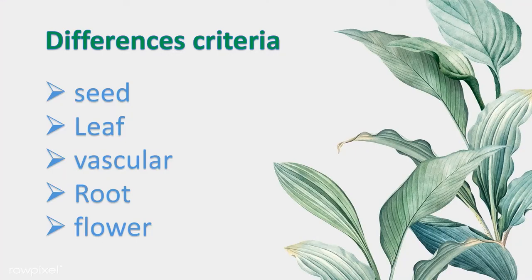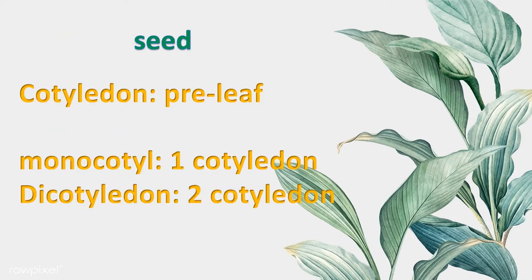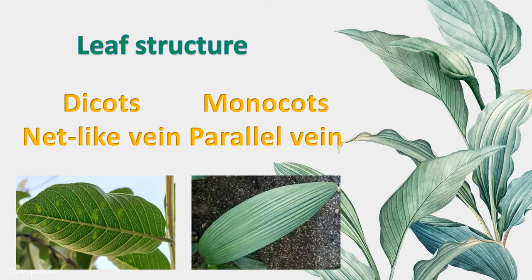The difference in the criteria between them is not just the seed, but also the leaf, the flower, and the root. Let's start from the seed again. The cotyledon means pre-leaves — the first leaves that will grow. The monocot has one cotyledon, while the dicot has two cotyledons.